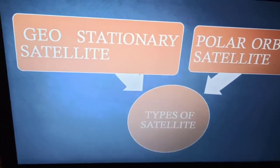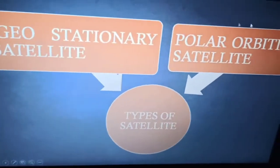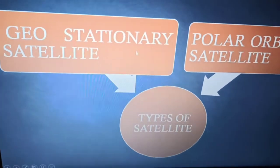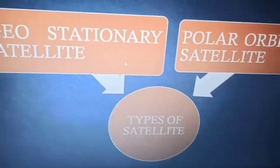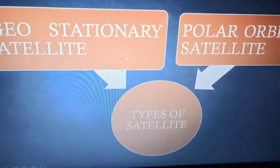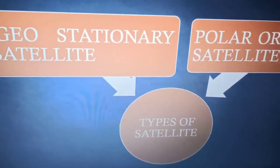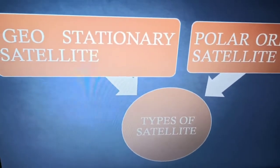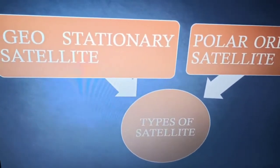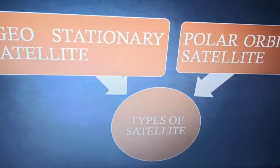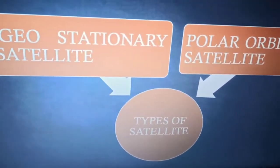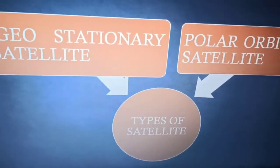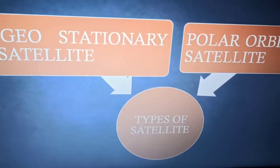One is the geostationary satellite and the other is the polar orbiting satellite. Geostationary satellites are those that orbit around the earth from west to east direction, moving at the same speed as the earth and orbiting over the equator.